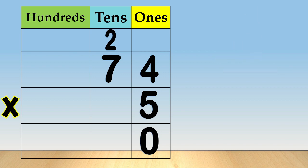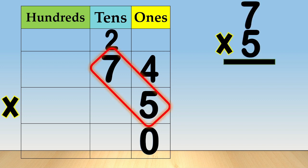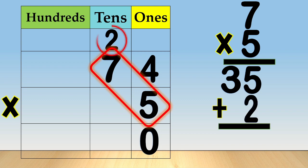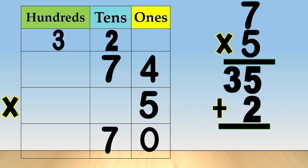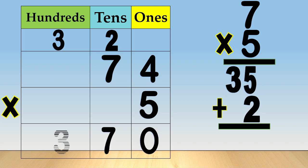Then, multiply the digit in the tens place. Seven times five is equal to thirty-five tens. Add the two tens that you have carried over. Thirty-five plus two is equal to thirty-seven tens. Now, regroup thirty-seven tens as three hundreds plus seven tens. Write seven in the tens column, carry three to the hundreds column, and bring down three to the hundreds column. So, seventy-four times five is equal to three hundred seventy.